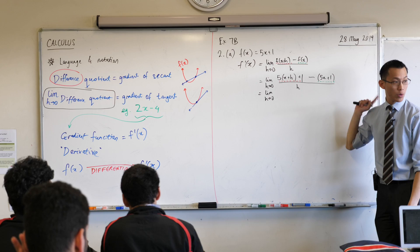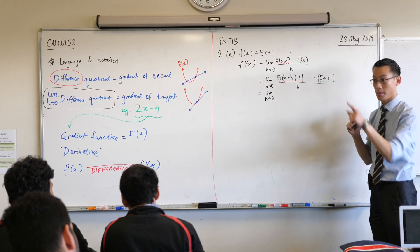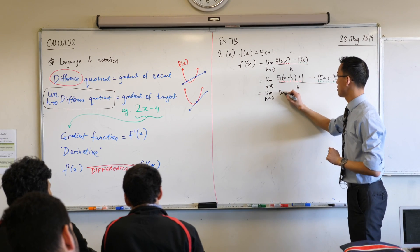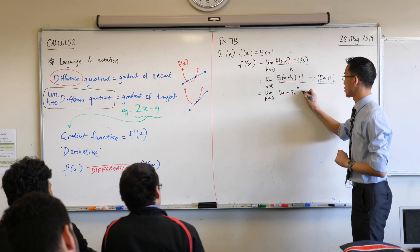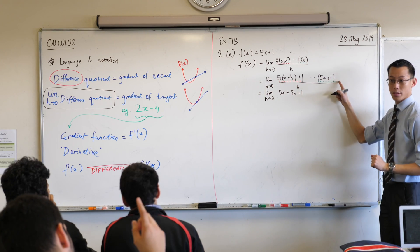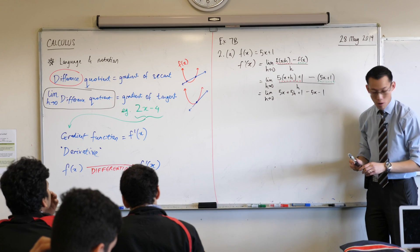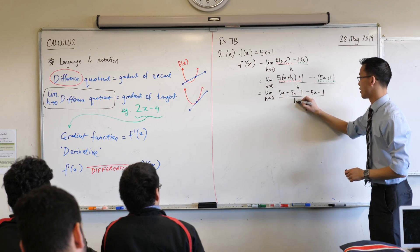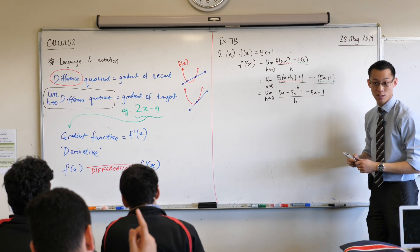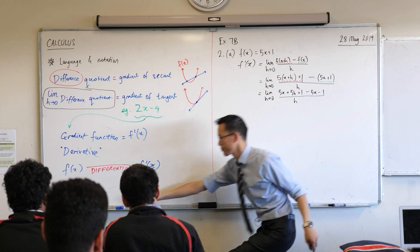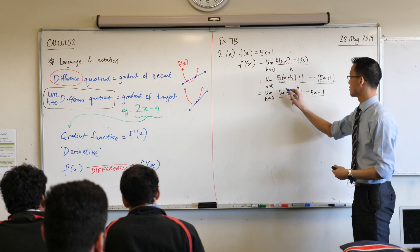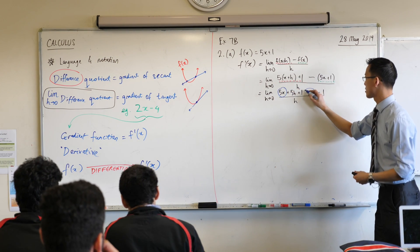All right, can you help me out? Can we do a bit of expansion and collecting like terms? Yep. So 5x plus 5h. Very good. 5x plus 5h plus 1. Done with that. Help me out with the second one, Rassand. Minus 5x minus 1. Fantastic. Now, if we did this right, some stuff should cancel, right? What can you say? 5x minus 5x plus 1 and minus 1. These guys? Just 1 and 1.